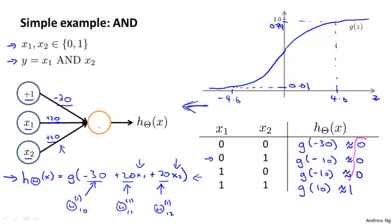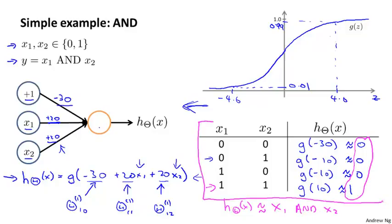And if you look in this column, this is exactly the logical AND function. So this is computing h of x is approximately x1 AND x2. In other words, it outputs 1 if and only if x1 and x2 are both equal to 1. So by writing out our little truth table like this, we manage to figure out what's the logical function that our neural network computes.